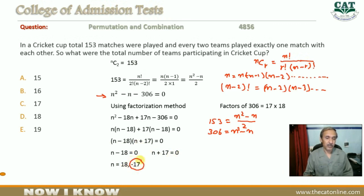Minus 17 is not possible because a negative number of teams is not possible. So the answer is n equals 18, which is option D.